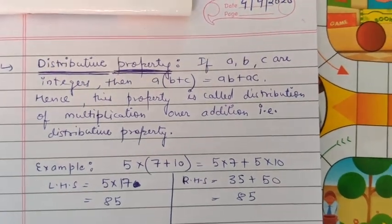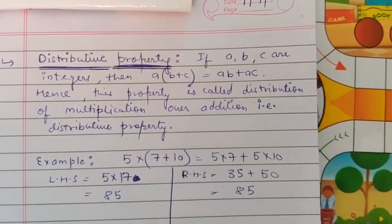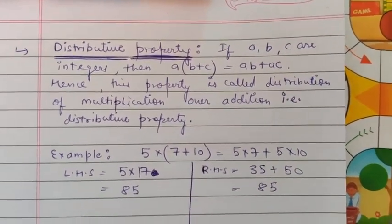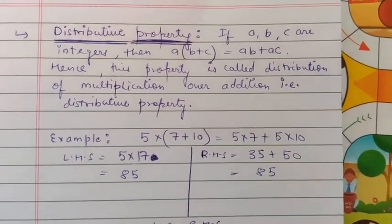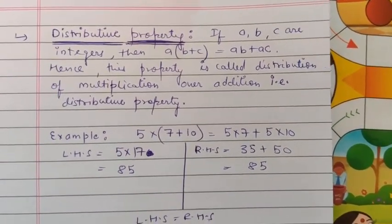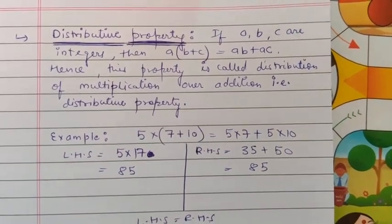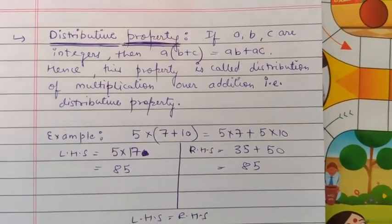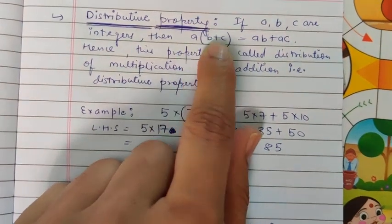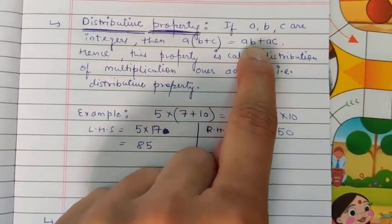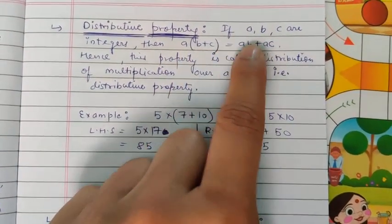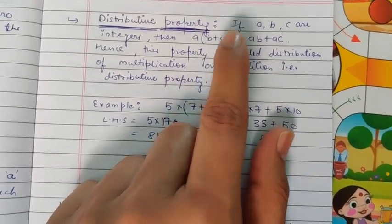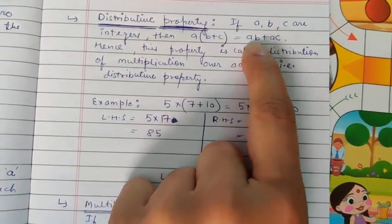Good morning grade 7 students. We are continuing our topic: properties of integers. Next is the distributive property. If a, b, and c are integers, then a × (b + c) = ab + ac. This is the left hand side and this is the right hand side. Basically, we are distributing a with b and c.